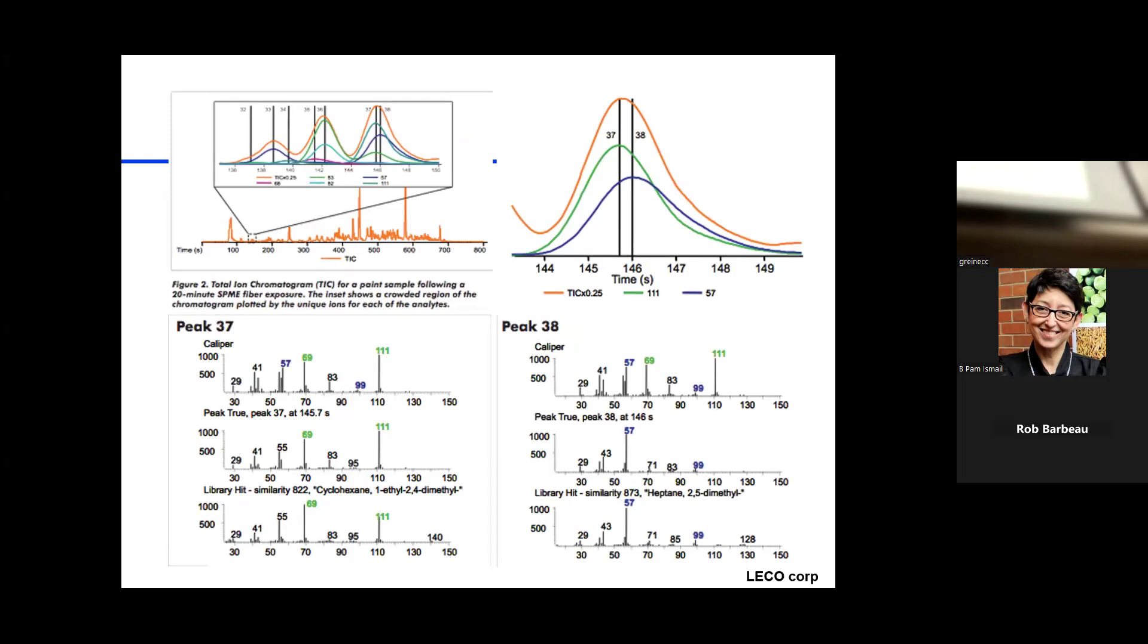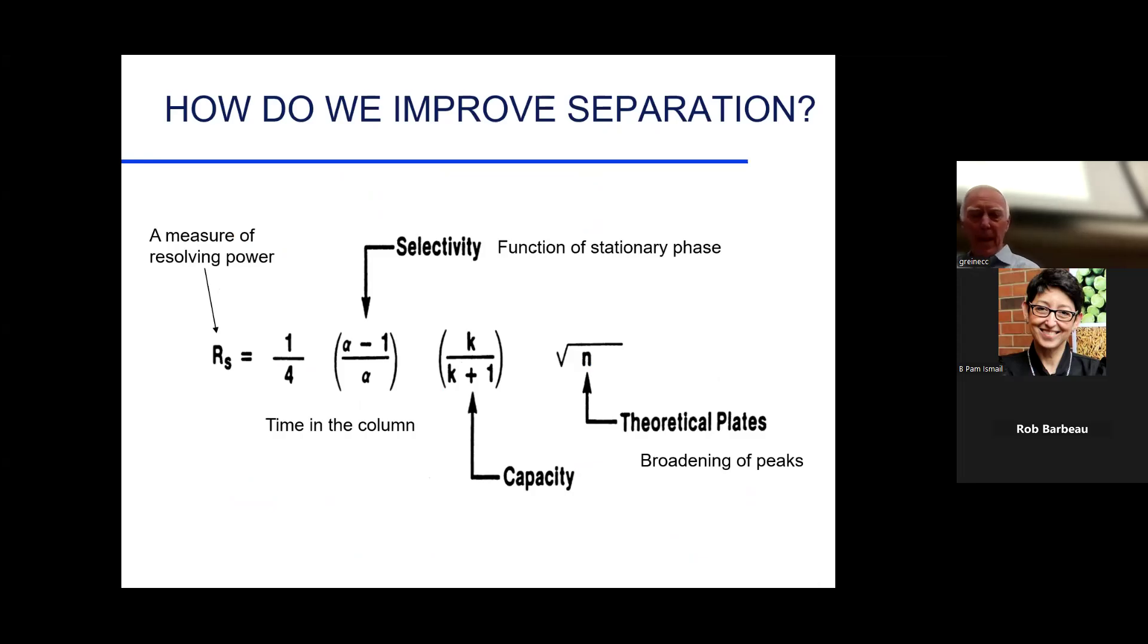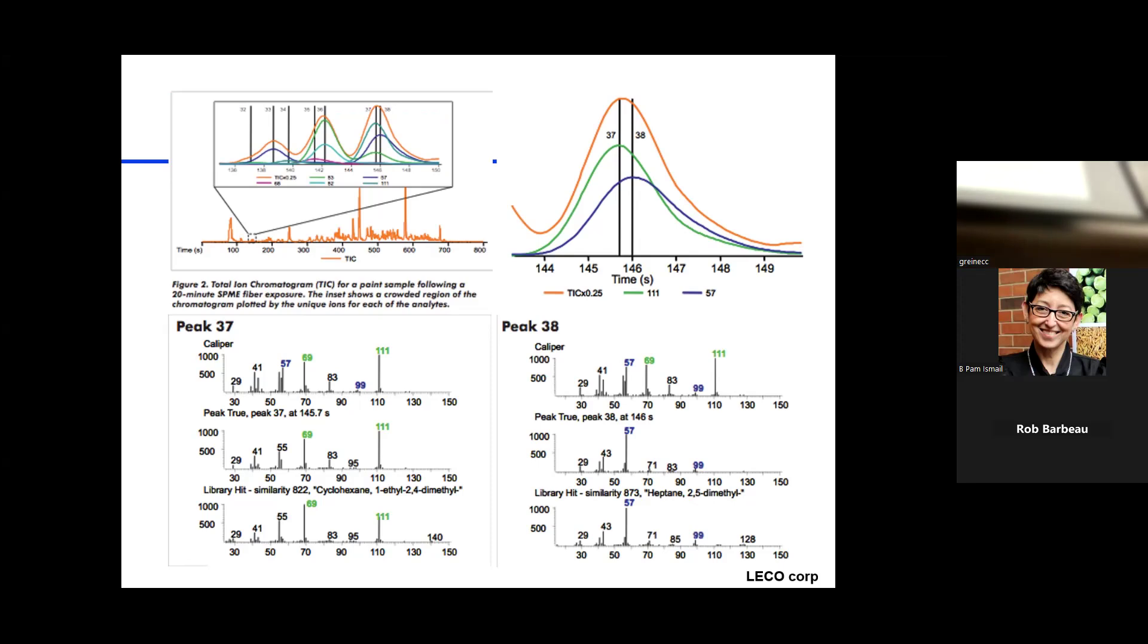This shows you the mass spectra of this compound. These masses are just a fraction of a second off. This monitors everything that's a fraction of a second later, this monitors everything that's eluding first. So you actually get two spectra. The mass spectrometer is smart enough to do that. You're looking for two different compounds in the system.